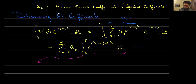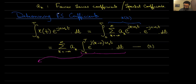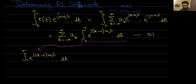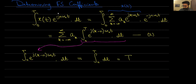Let me call this equation number two. Now I need to evaluate the integral from zero to T of E raised to J (K minus N) omega naught T DT for two cases. The first case is when K equals N. In this case, the exponent is zero, so E raised to zero is just one, and the integral from zero to T of one DT is simply equal to capital T.